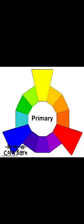Primary colors are those colors which cannot be made by mixing any other color. There are three such primary colors we are aware of, which are red, yellow, and blue. Next come secondary colors.